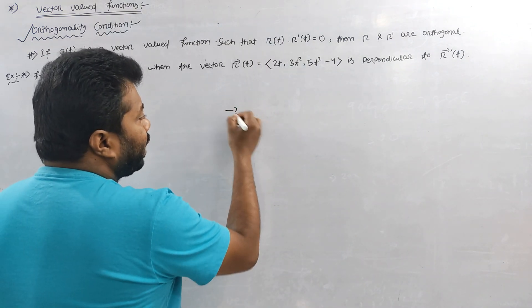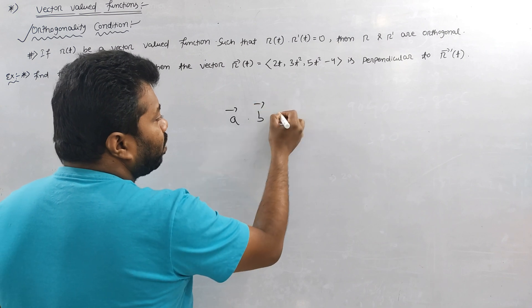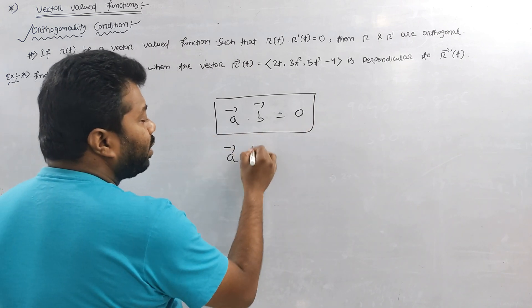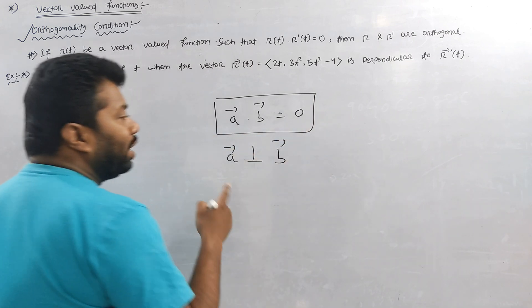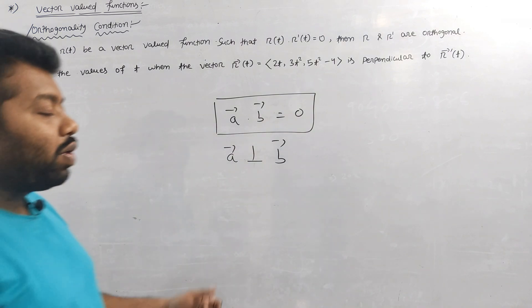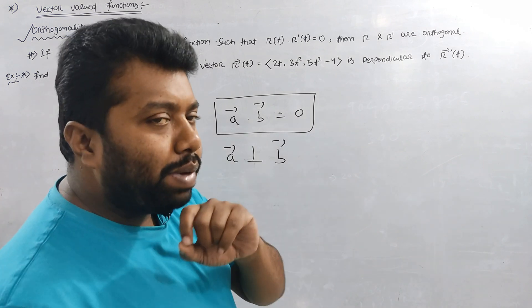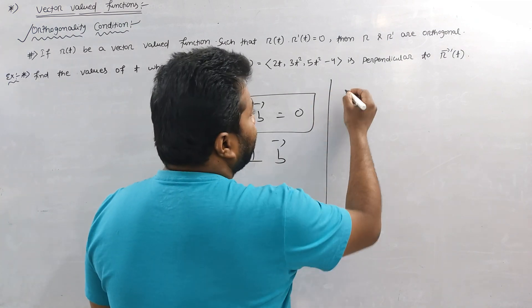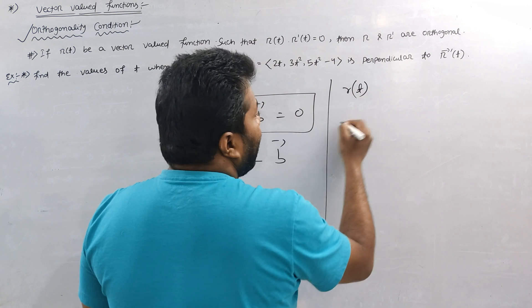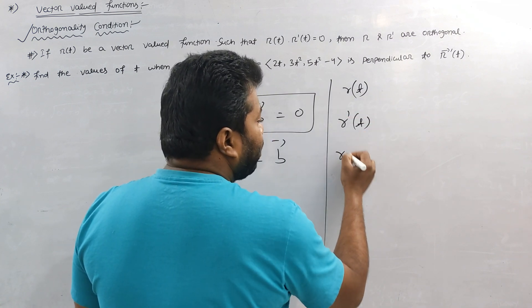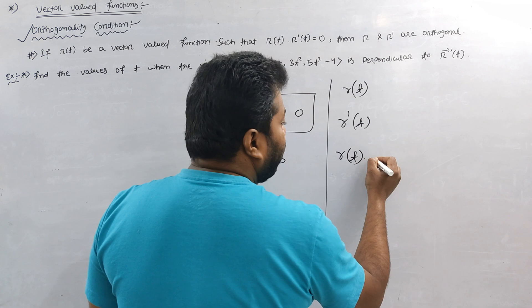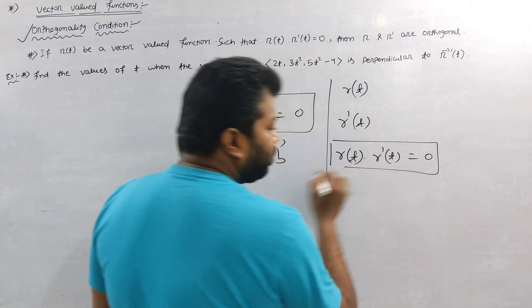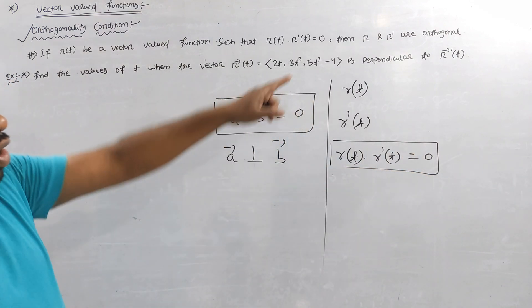If a vector a dot b is zero, then a and b are perpendicular vectors. If a vector is R of t, the derivative is called R dash t. If a dot product is zero, then it is zero. If a vector is zero, then it is orthogonal.